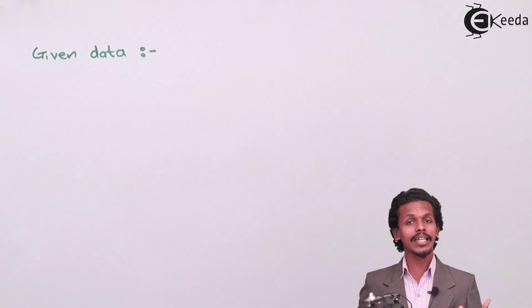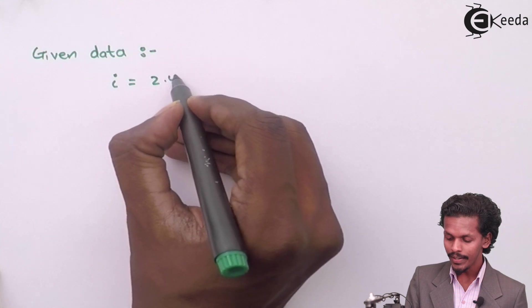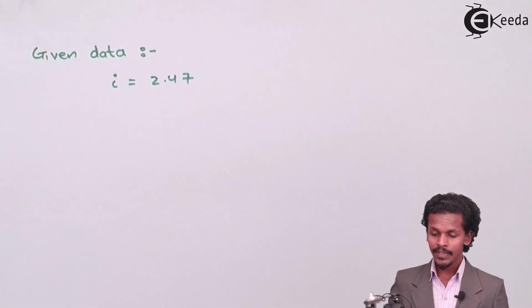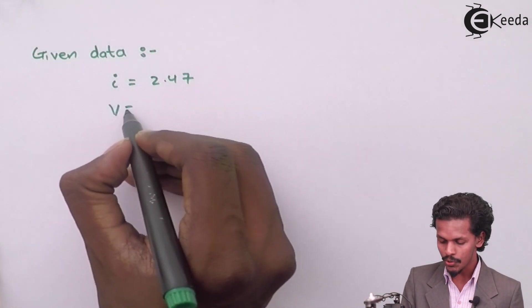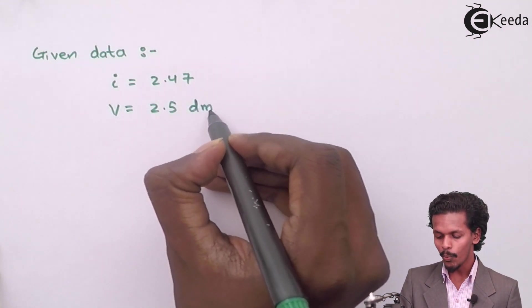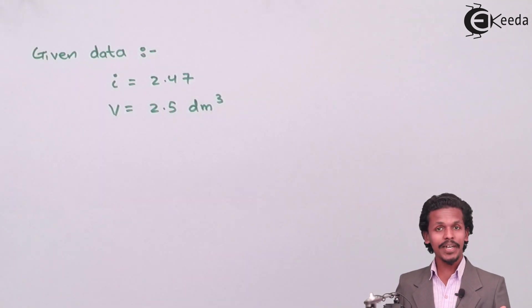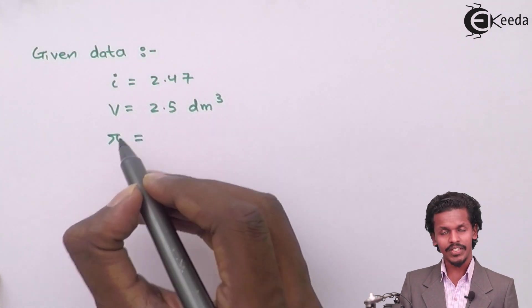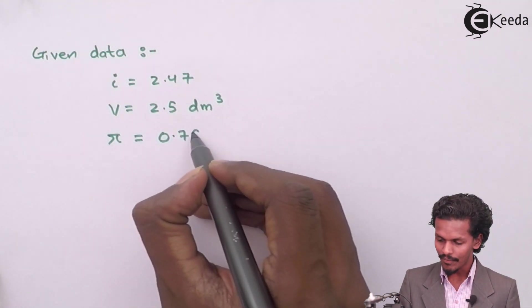So the given data's are first of all the Van't Hoff factor is given, that is i is equals to 2.47. Later on the volume of the pure solvent is also given, that is V is equals to 2.5 liter or we can say as 2.5 dm cubed. And later the osmotic pressure is also given.